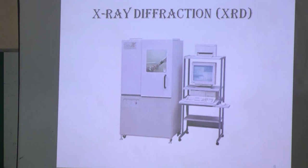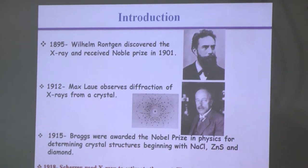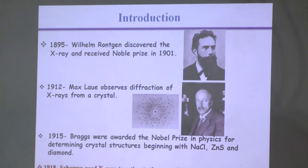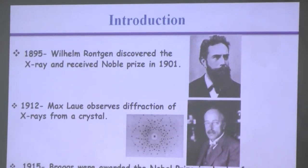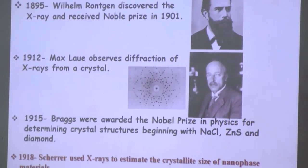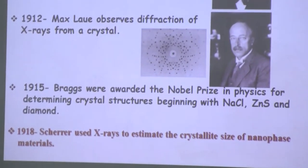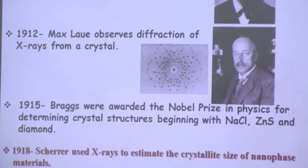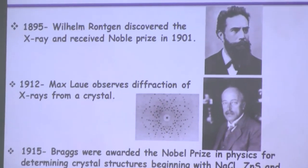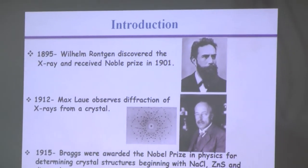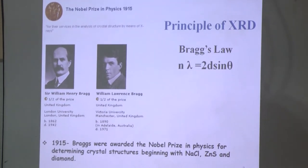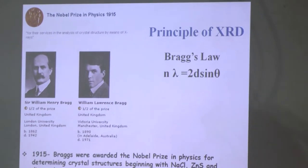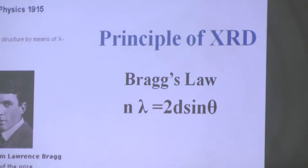This is a typical XRD instrument today — a computer with software for processing data and a machine on the other side. X-rays were invented in 1895, when atomic structure was not yet established. Röntgen received the Nobel Prize in 1901. In 1912, Max von Laue observed diffraction of X-rays from crystals like NaCl. In 1915, the Braggs received the Nobel Prize for determining crystal structure. In 1918, Scherrer used X-rays to establish the crystallite size of nanophase materials.